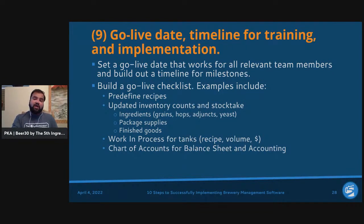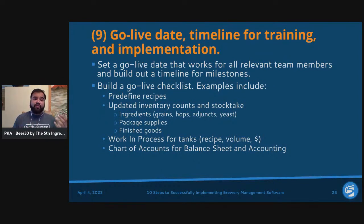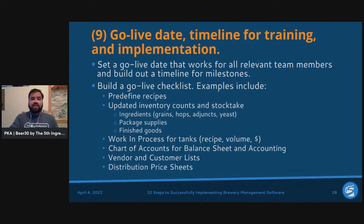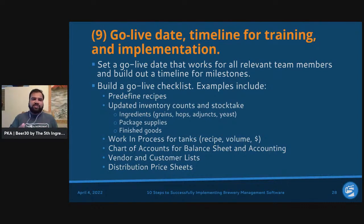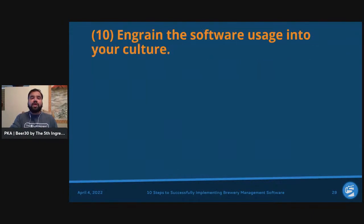Also include work-in-process: tank recipes, volumes in barrels or hectoliters, and corresponding dollar values; chart of accounts for balance sheets and accounting migration; vendor and customer lists from your existing accounting system; and distribution price sheets — making sure prices are set up so a salesperson logging in at a taproom or bar knows exactly whether a keg is $80 or $180.